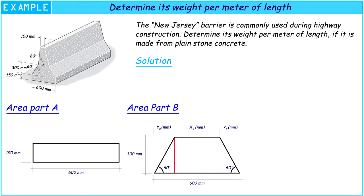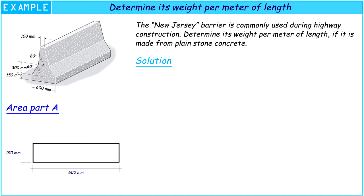Part A, Part B, and the last one is Part C. For Part A we have 600 mm length and 150 mm width. So the area of Part A is 0.09 square meters.